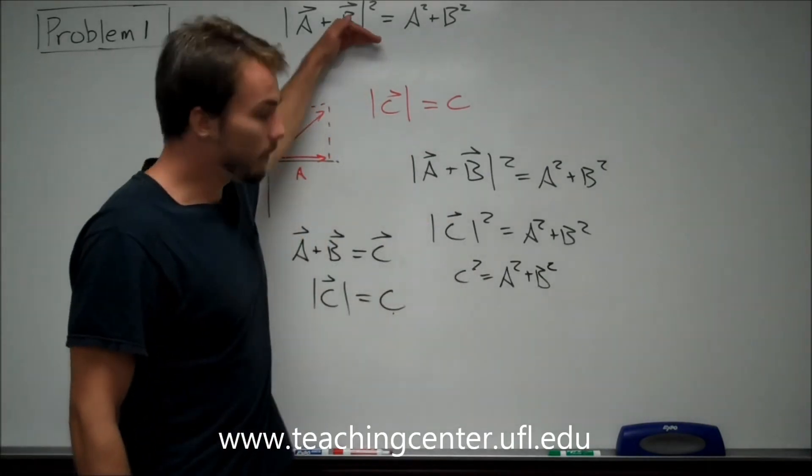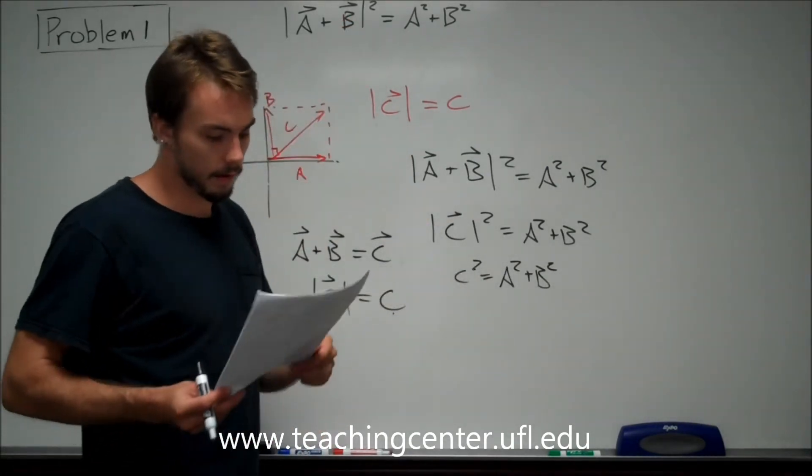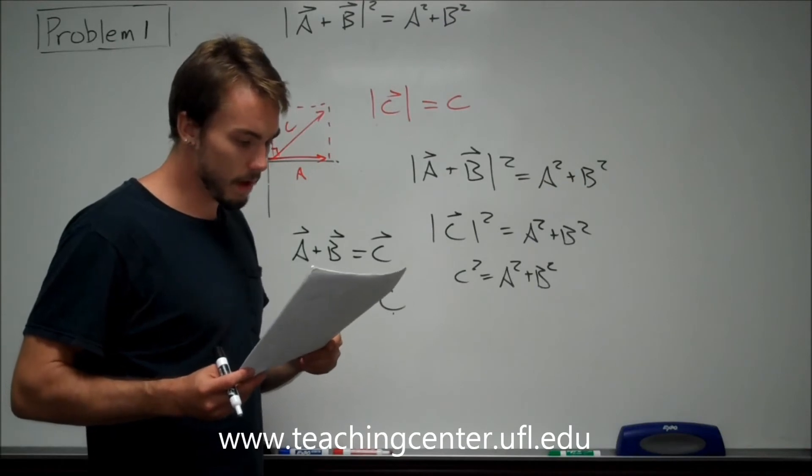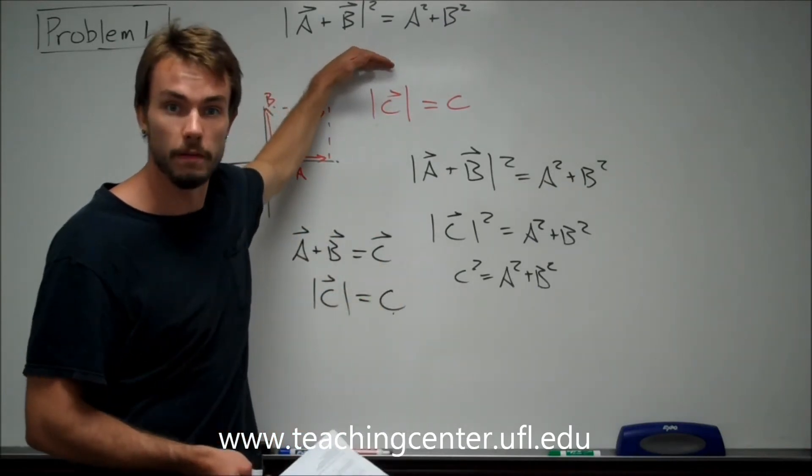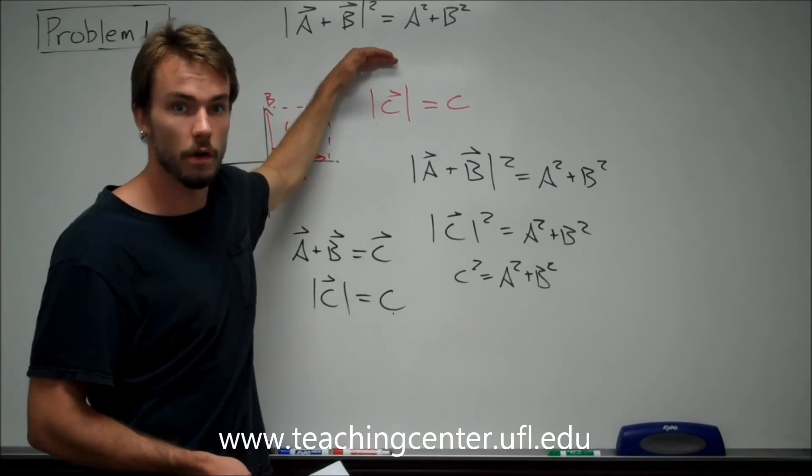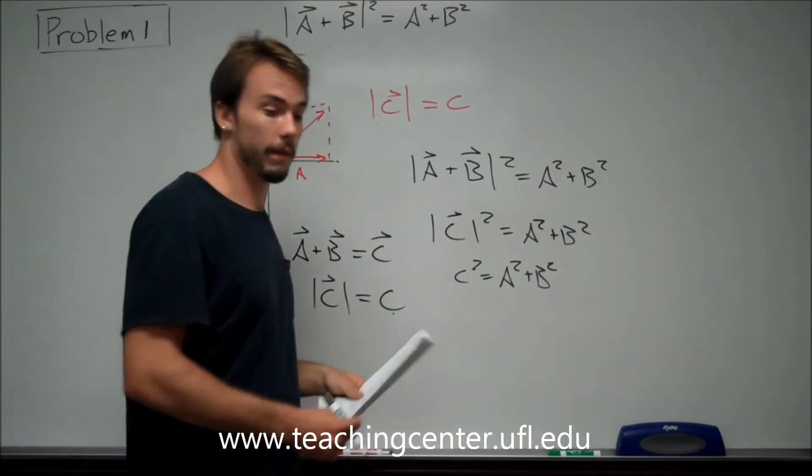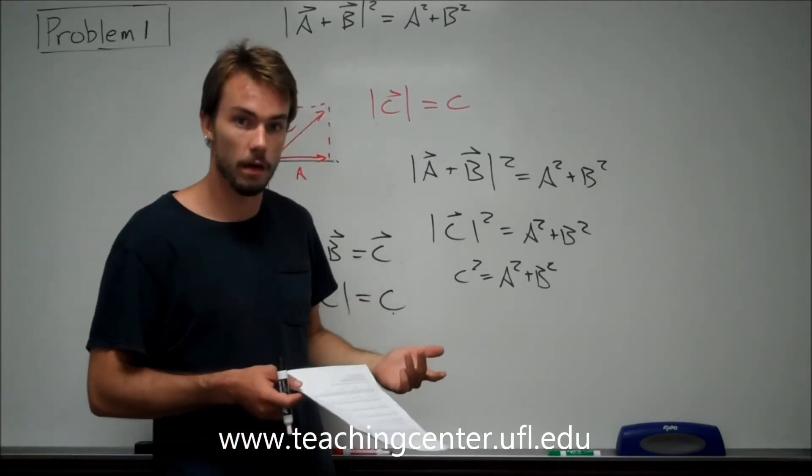Now it should look a little more familiar to you. Now we understand what we're looking at. We have to look at the problem again and say this is asking us when these conditions are true. We just define these conditions as being true when they're perpendicular to one another. So AB are 90 degrees.